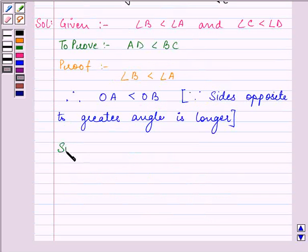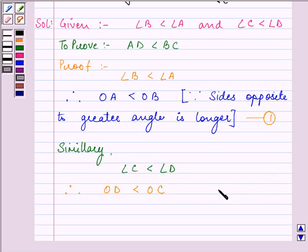Similarly, angle C is less than angle D, so we can write therefore OD is less than OC. Let this be equation 1 and this be equation 2.